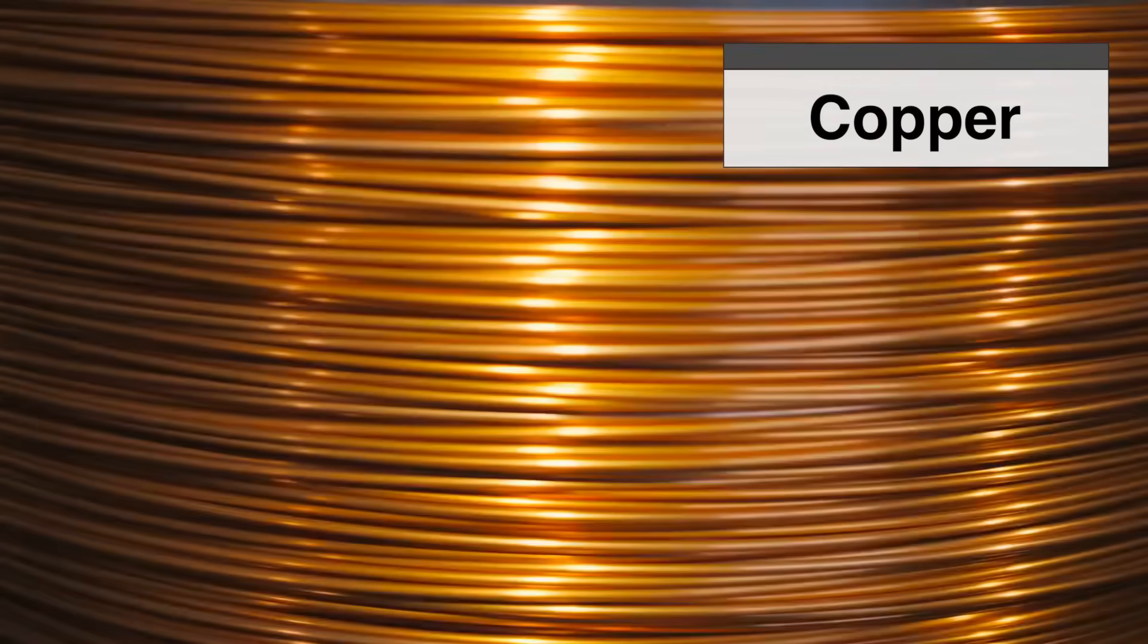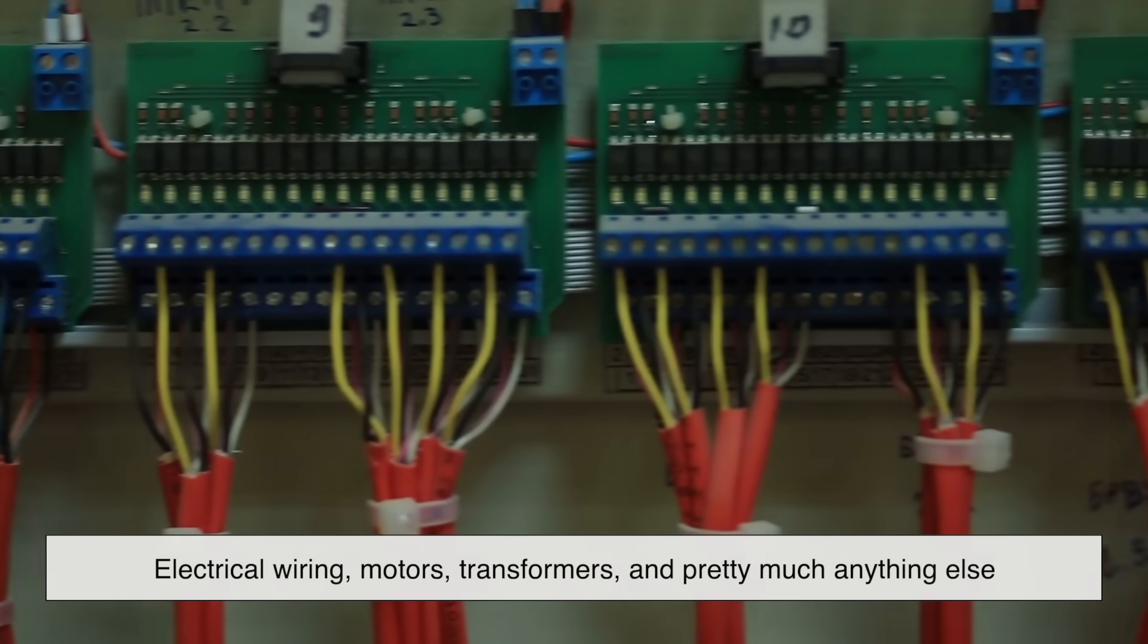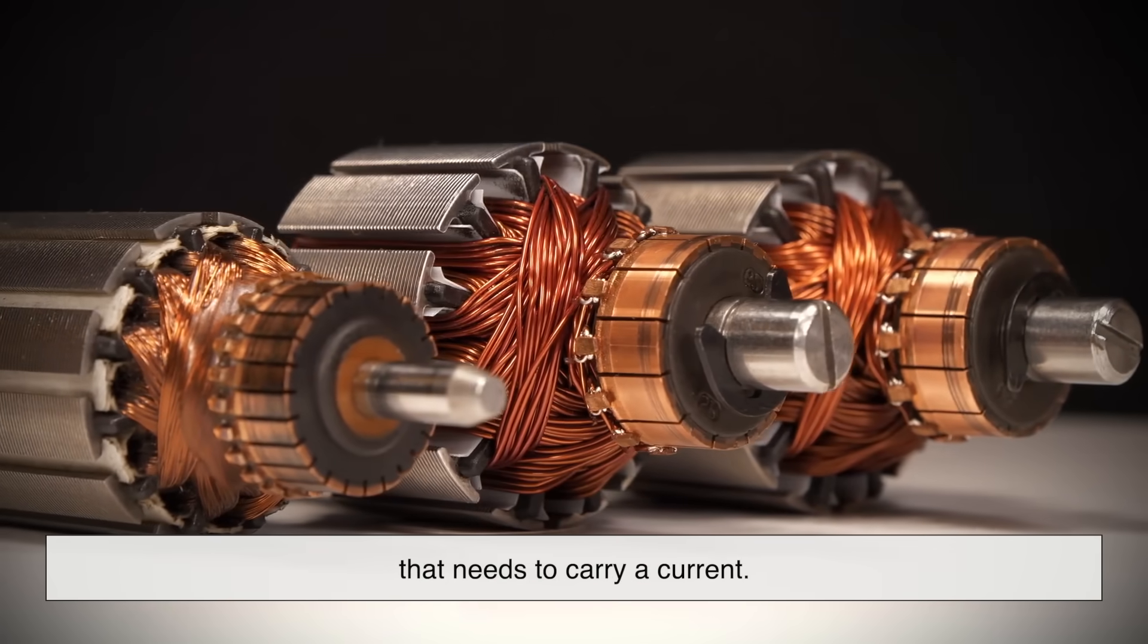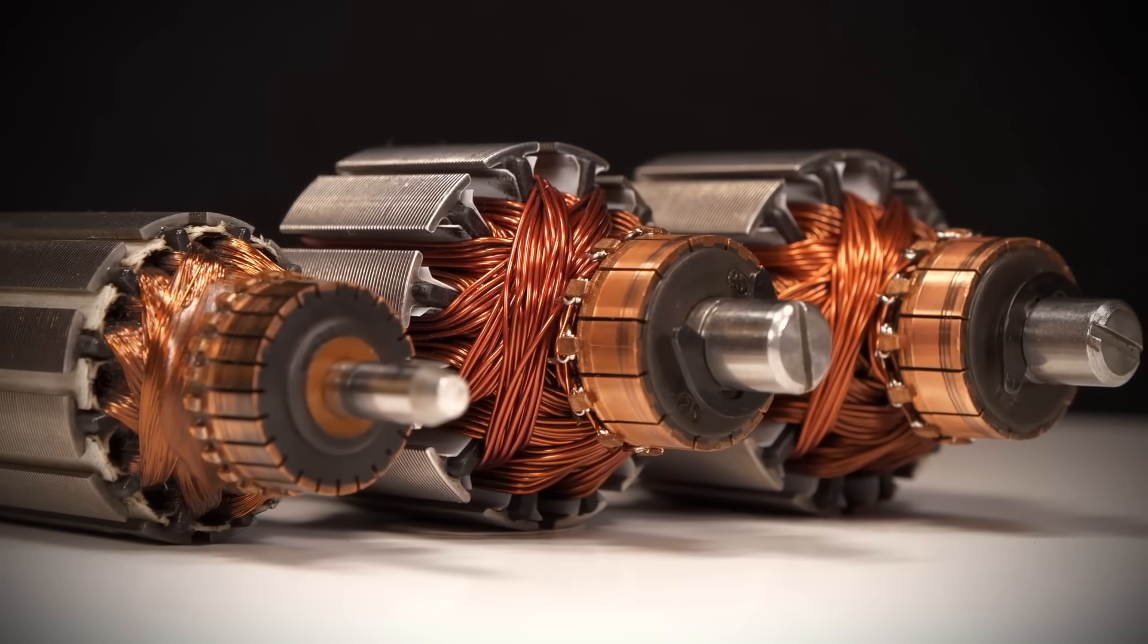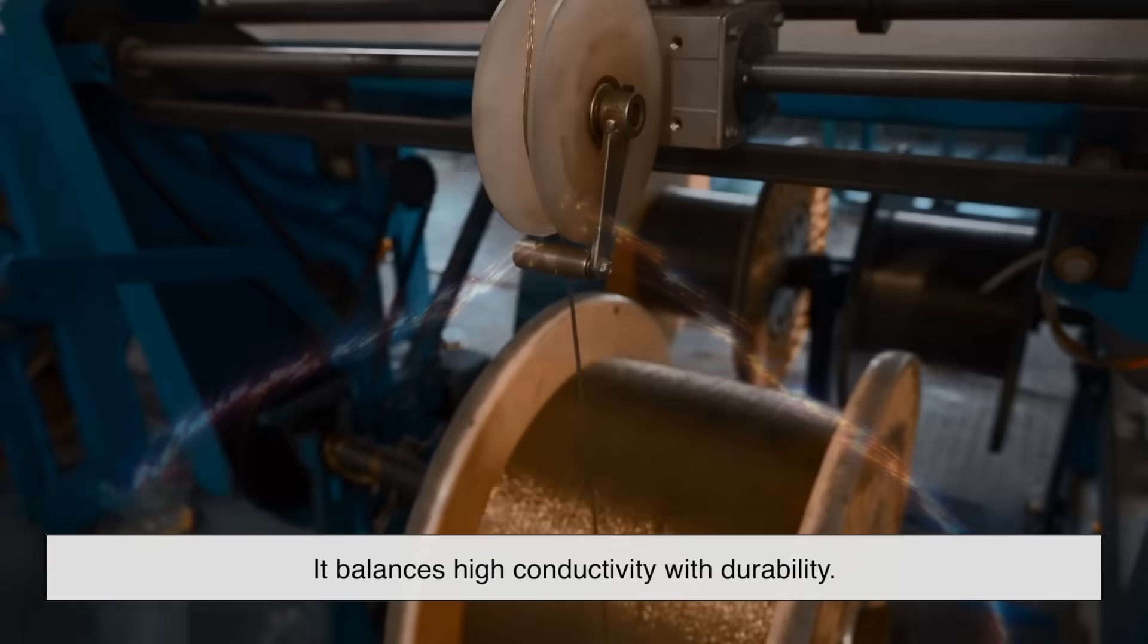Copper may not beat silver in conductivity, but it comes in a very respectable second, and it's far more affordable. That's why it's the standard for electrical wiring, motors, transformers, and pretty much anything else that needs to carry a current.